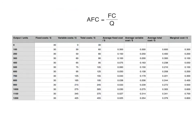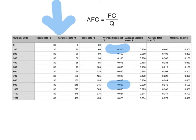Average fixed cost is fixed cost divided by quantity. To calculate it, you just need the output and the fixed cost. When you were producing 100 units, fixed costs were $30, so $30 divided by 100 gives an average fixed cost of $0.30. When producing 900 units, fixed costs were still $30, so $30 divided by 900 gives an average fixed cost of $0.033. Because fixed costs are fixed, the more you produce, the lower your average fixed cost — you are spreading those fixed costs over a larger quantity of output.